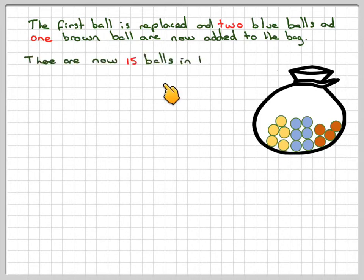There are now 15 balls in the bag because there were 12 plus the three more that we've added. The probability of getting an orange is going to be 5 out of 15.